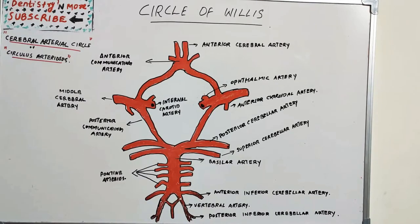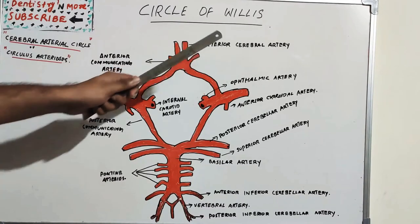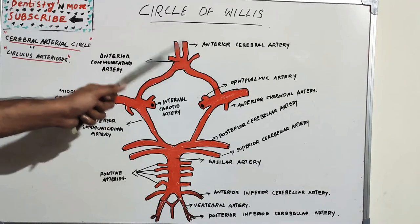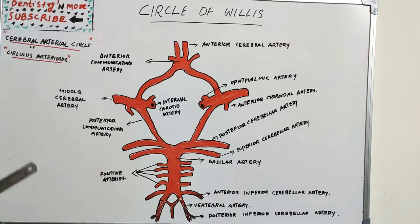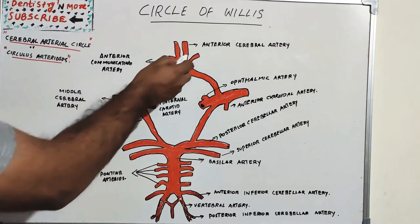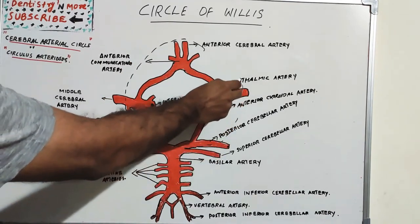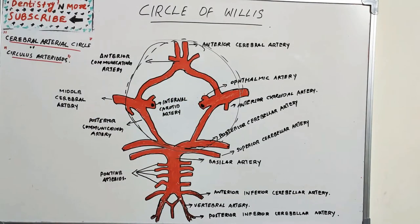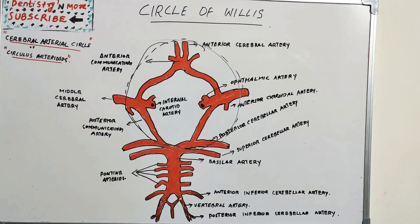To summarize, the Circle of Willis has four paired arteries — anterior cerebral artery, internal carotid artery, posterior communicating artery, and posterior cerebral artery — and one unpaired artery, the anterior communicating artery. The middle cerebral artery is not part of this circle. This is an important question frequently asked in university exams as a short note, requiring a diagram with the five arteries marked and two or three functions such as the safety valve mechanism and protection against ischemia and stroke.